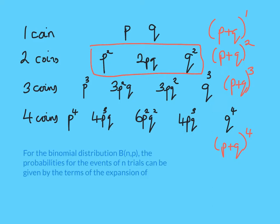There's a key note we can make that helps us calculate binomial distribution probabilities. If I flipped one coin, my probabilities were given here; two coins, the expansion of this; three coins, the expansion of this; four coins, the expansion of this. And so for N, it would be P plus Q to the power N. We're going to look at one more useful thing — Pascal's triangle — and then we'll do a couple of examples.